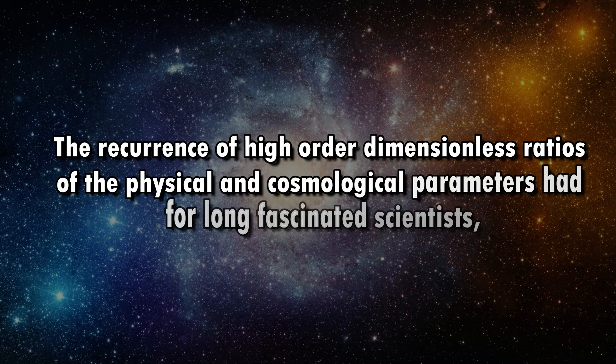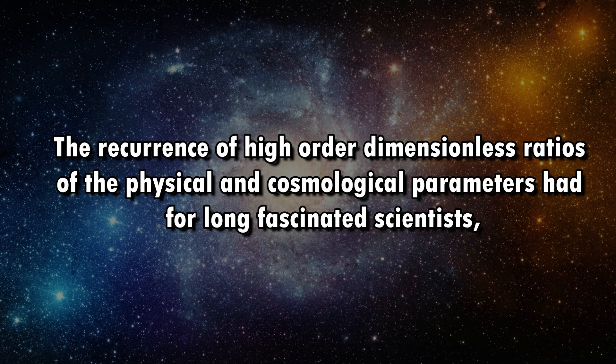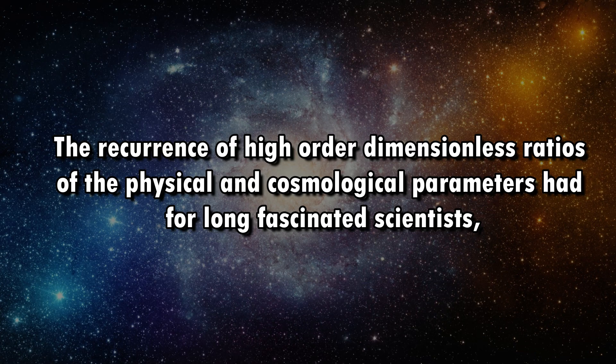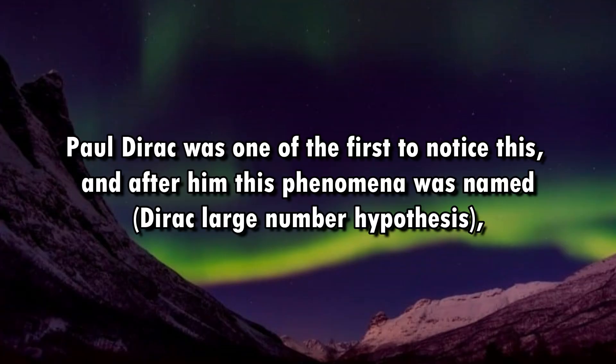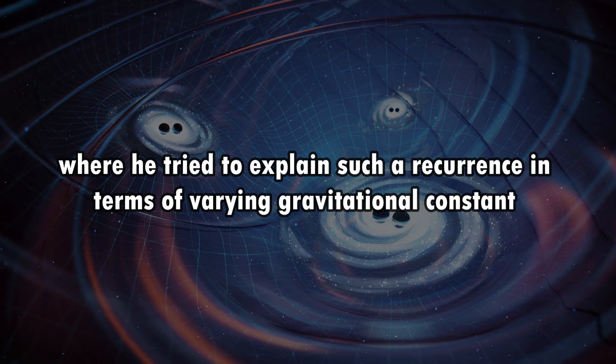The recurrence of high-order dimensionless ratios of the physical and cosmological parameters had for long fascinated scientists. Paul Dirac was one of the first to notice this, and after him this phenomenon was named Dirac Large Number Hypothesis, where he tried to explain such a recurrence in terms of varying gravitational constant.